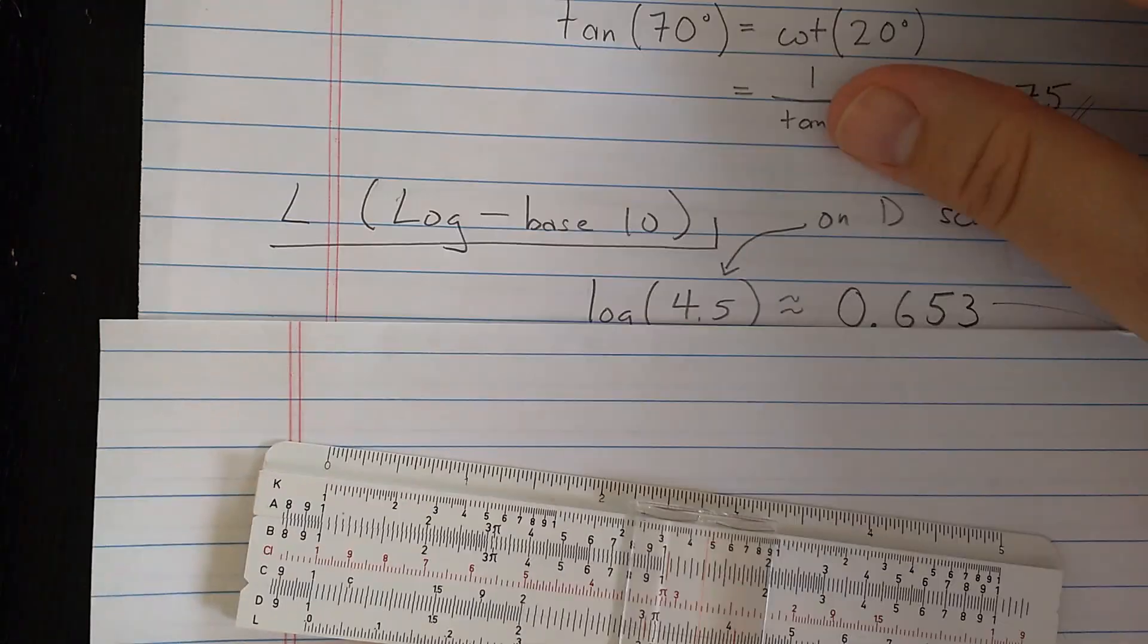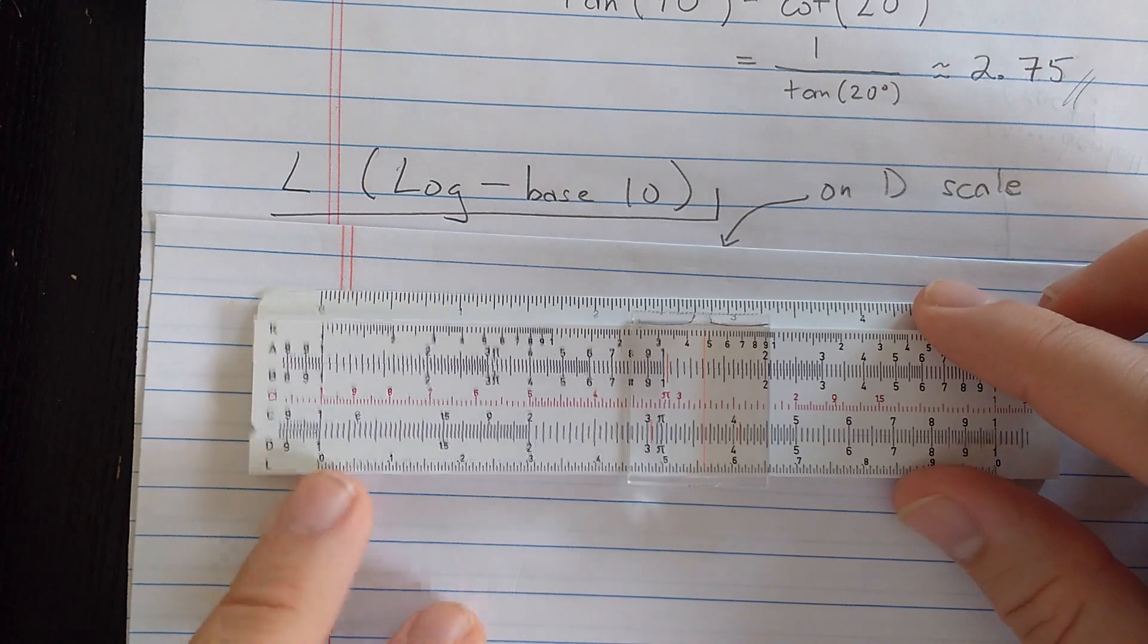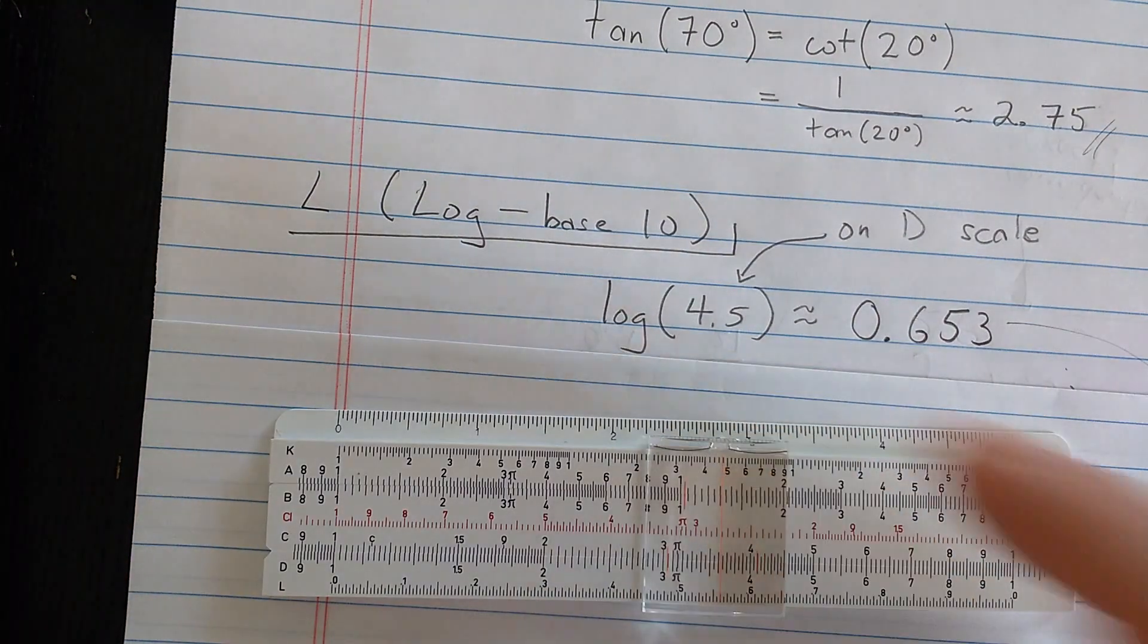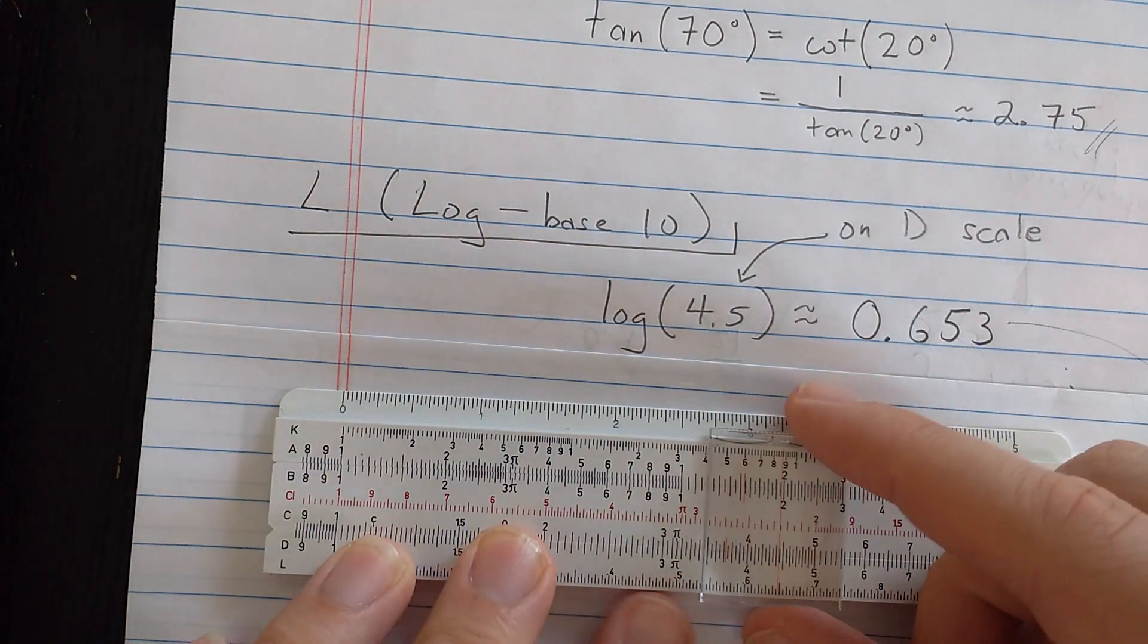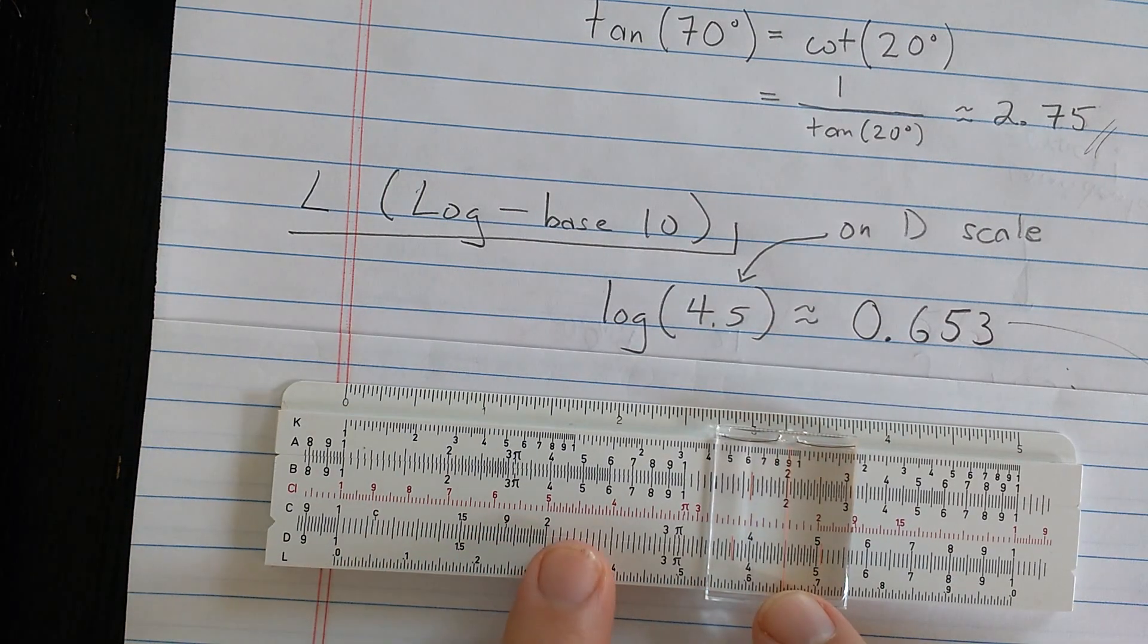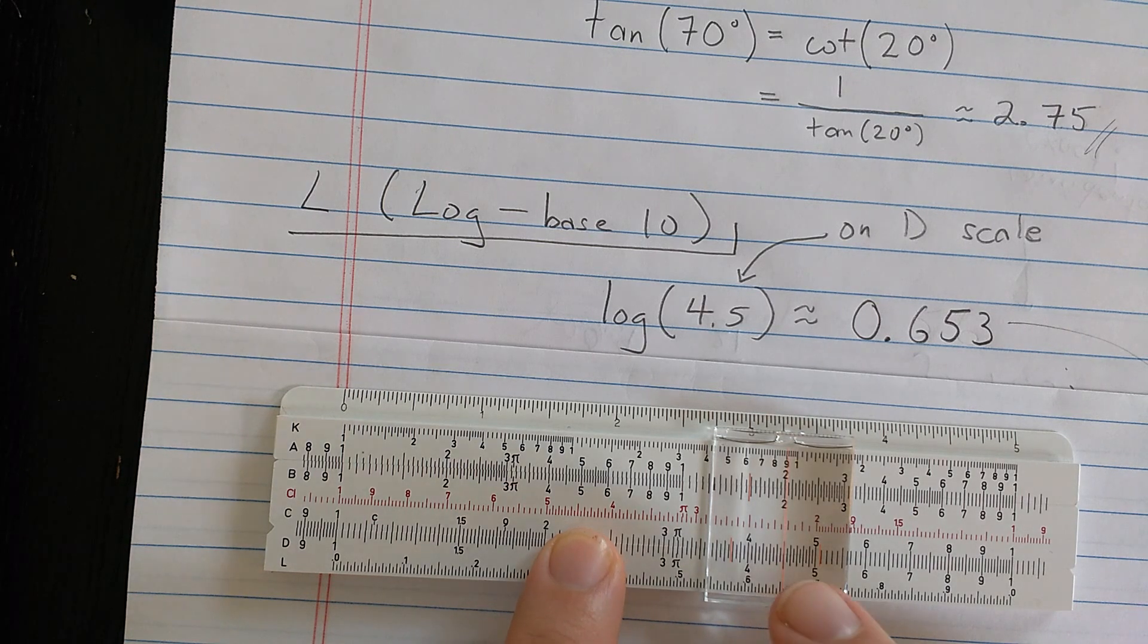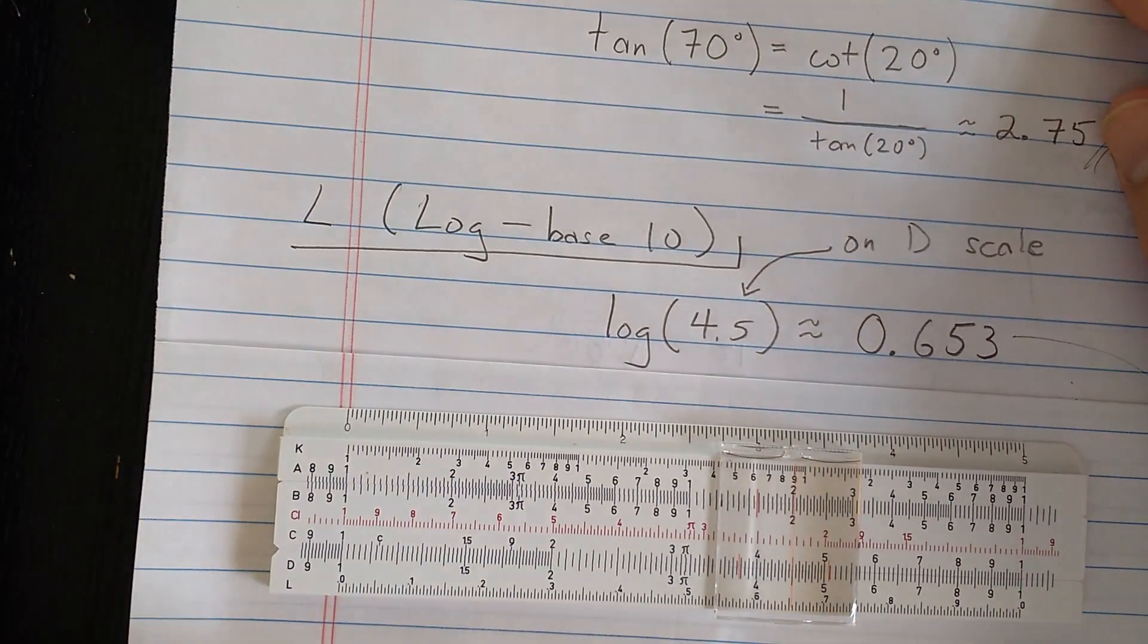The last scale I want to explain is the log scale, the L scale. You can see the L scale is actually a linear scale. Now, the way you use this scale is to compute log of, say, 4.5. I actually find 4.5 on the D scale. Then I read the result, 0.653 about, on the L scale.